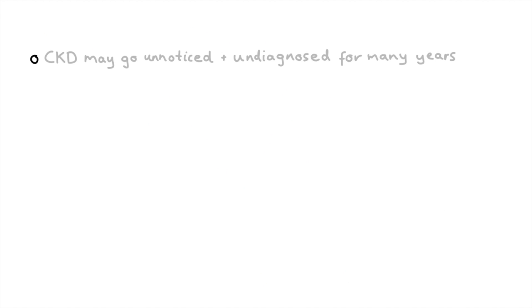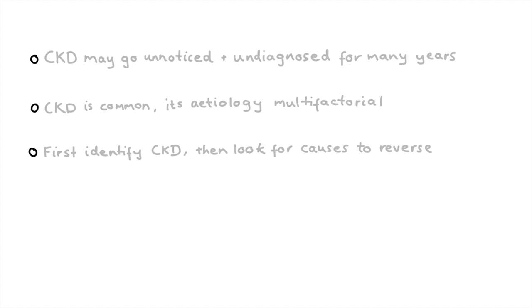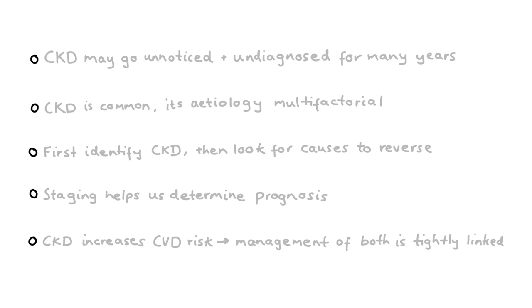So in summary: CKD may go unnoticed and undiagnosed for many years. CKD is common and its etiology is multifactorial. We need to first identify CKD and then look for causes that we can reverse. Staging helps us determine the patient's prognosis. And lastly, CKD increases cardiovascular disease risk, so the management of both is tightly linked.